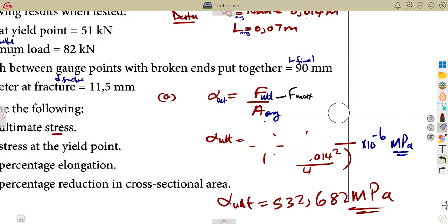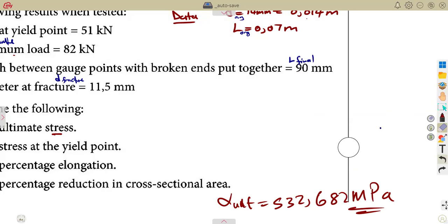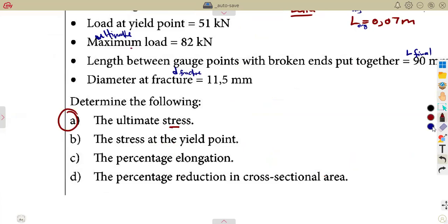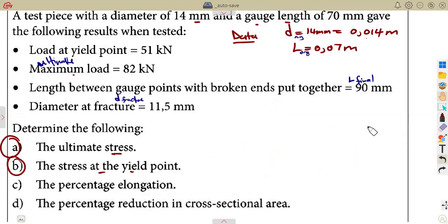Just like that. So just be able to tell which part are you working with. That's why they are simply testing you there. Nothing much. You move on to the other one. The stress at the yield. Meaning to say, nothing has changed.